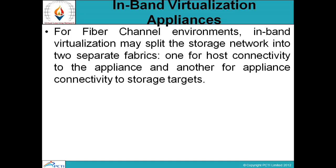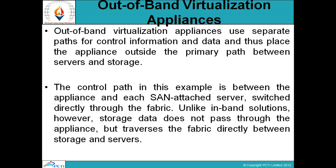Out-band virtualization uses separate paths for control information and data. The appliance is placed outside the primary data path between server and storage. In out-band virtualization, the control path runs between the appliance and each SAN switch directly through the fabric. Unlike an in-band solution, actual storage data does not pass through the appliance but travels the fabric directly between storage and server.